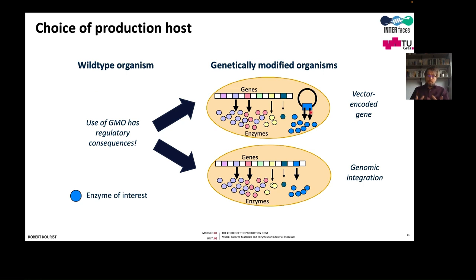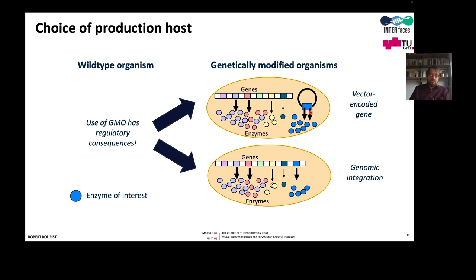It should not be forgotten that the use of GMOs has regulatory consequences. For some applications it can be a problem if the enzyme is produced in a genetically modified organism — for instance, if the product must carry a label such as 'natural' or 'organic,' this can be an issue and would be a reason to work with the wild-type organism. For the majority of enzymes produced nowadays, however, a genetically modified organism is used.